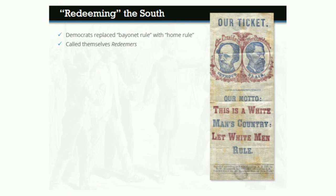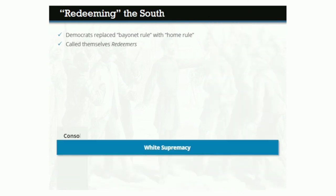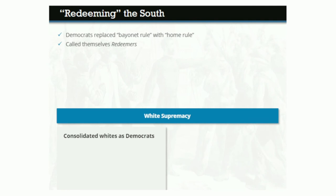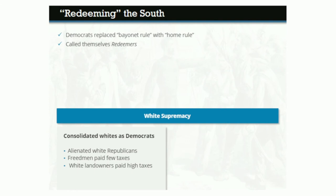The Redeemers' strategy to re-establish white supremacy had two parts. First, they worked to consolidate all Southern whites into the Democratic Party by alienating white Republicans. Local papers printed the names of whites who collaborated with freedmen or voted Republican; these people found themselves socially cast out or even became victims of violence. Democrats also pointed out that most freedmen who could not afford land paid few taxes, while taxes on white landowners were high because of Reconstruction. By the 1870s, fewer and fewer Southern whites were willing to call themselves Republicans.